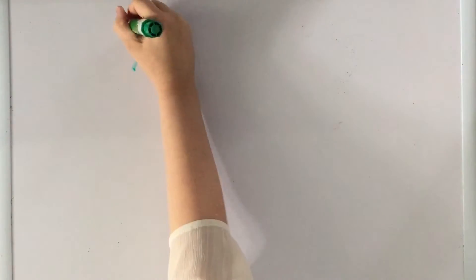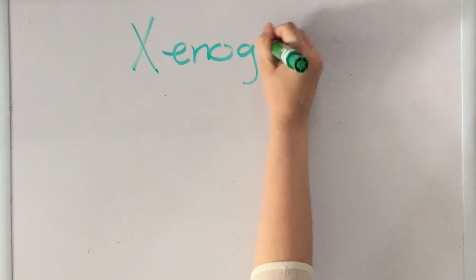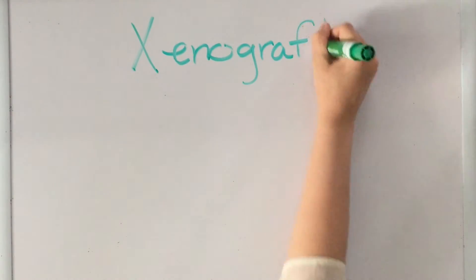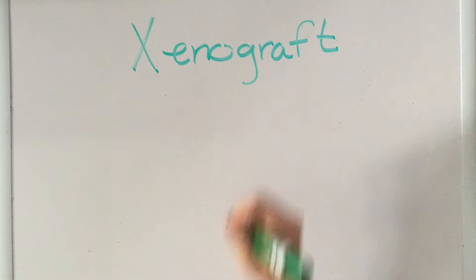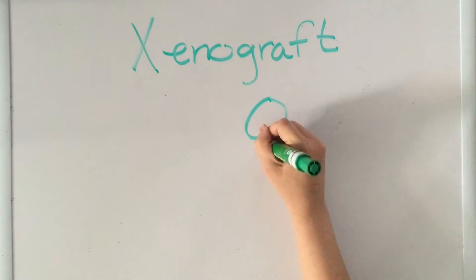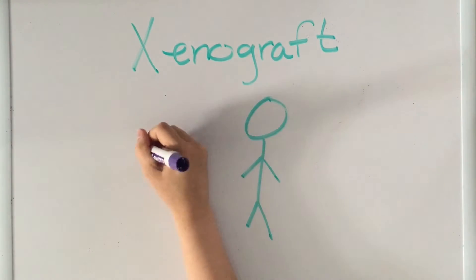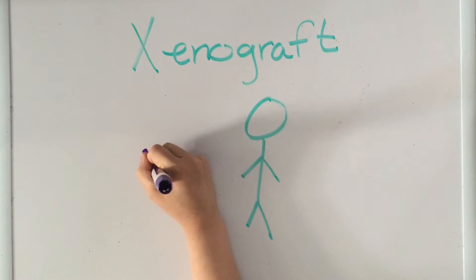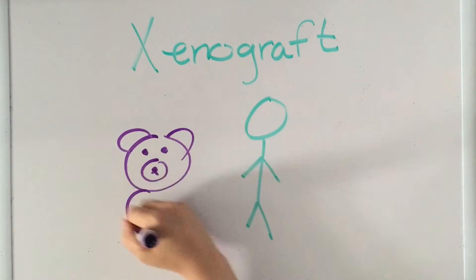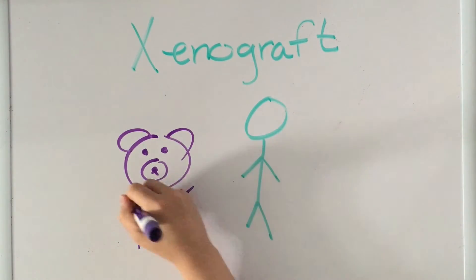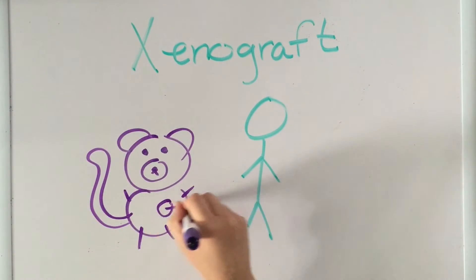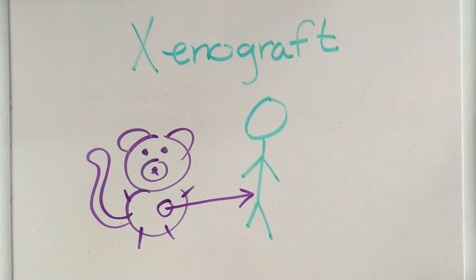The last type is called a xenograft. These are grafts between members of different species, like from a monkey to a human, as you can see by Jenny's beautifully drawn pig monkey bear. These are rarely successful.